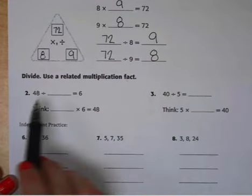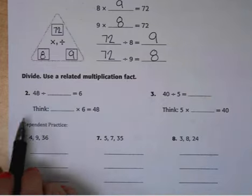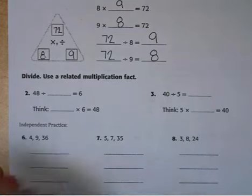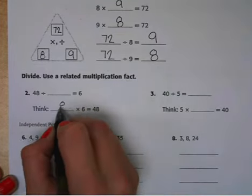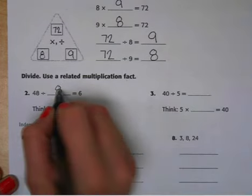All right, so for number 2, we have 48 divided by blank equals 6. So to solve this, you can think what times 6 equals 48. So we know that 8 times 6 equals 48. So if we reverse it, 48 divided by 8 equals 6.